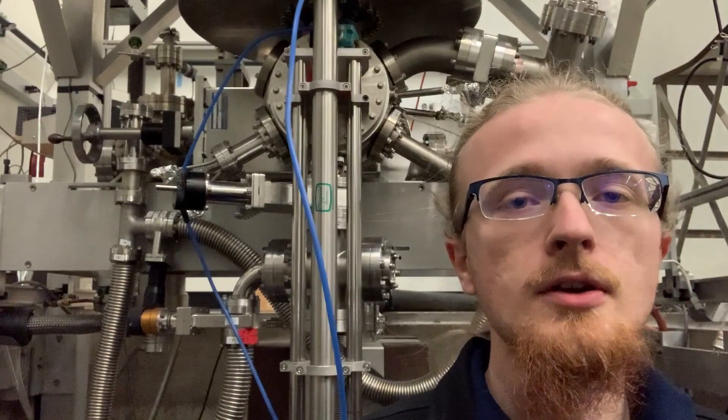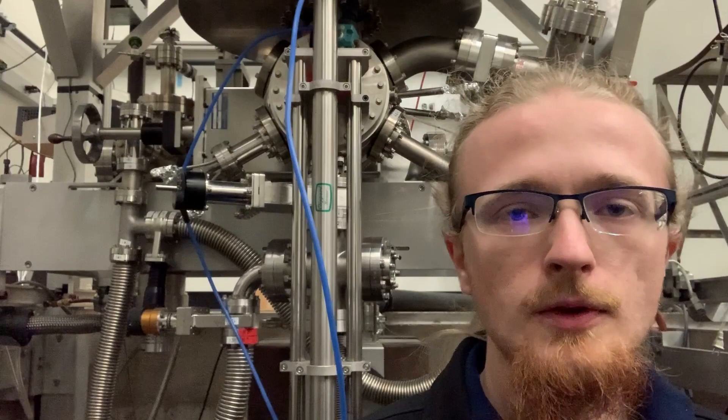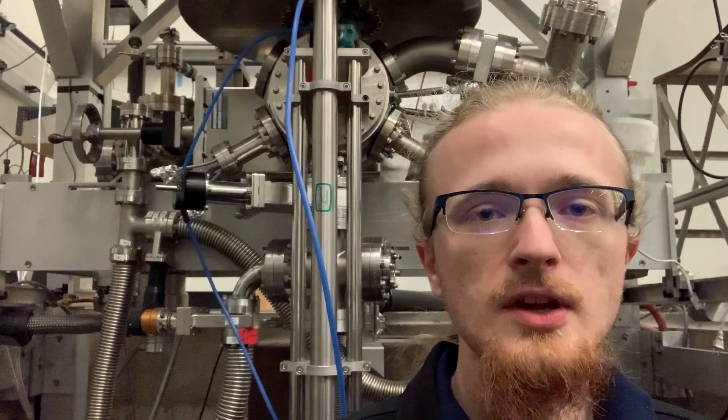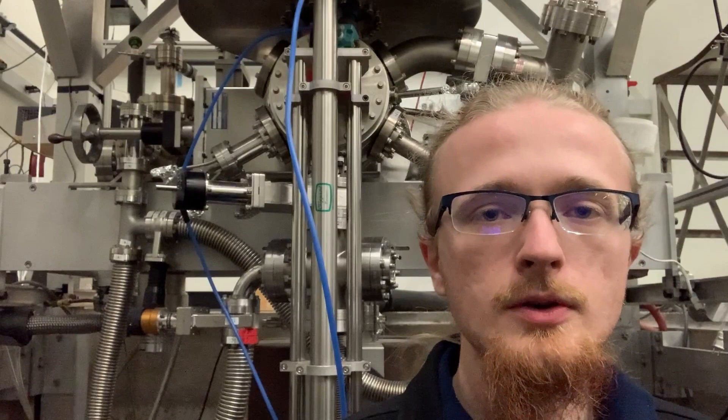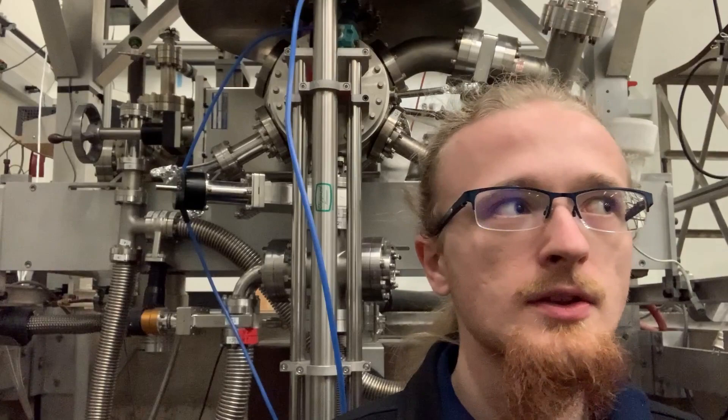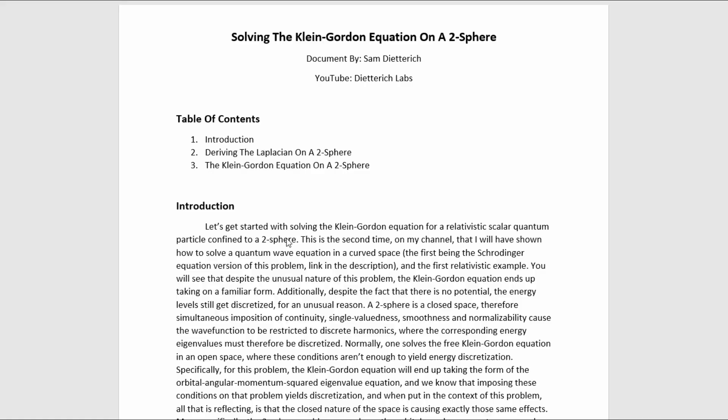As a result, if you've seen the Schrodinger equation version, there's going to be a lot of repetition here. So if you have seen the Schrodinger equation version, it may actually be worth it for you to go to the very end of this video and just see the few differences that show up there. The reason I've included all the details that are common to both videos is because I don't want people who haven't seen the Schrodinger equation version to feel like they need to watch that video in order to understand this video.